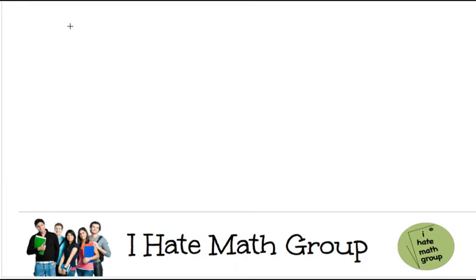Hi guys, welcome back. So here I have 2x squared plus 3x minus 6 equals to 0.